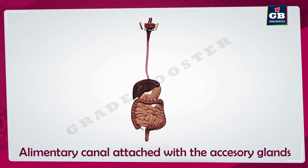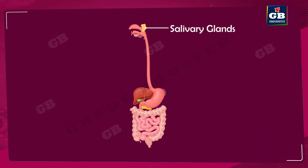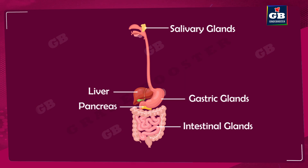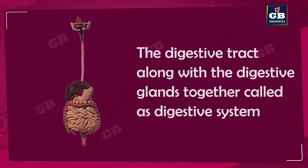These glands include: salivary glands, gastric glands present in the walls of the stomach, liver, pancreas, and intestinal glands present in the small intestine. All these glands secrete their secretions into the digestive tract to help in the process of digestion.